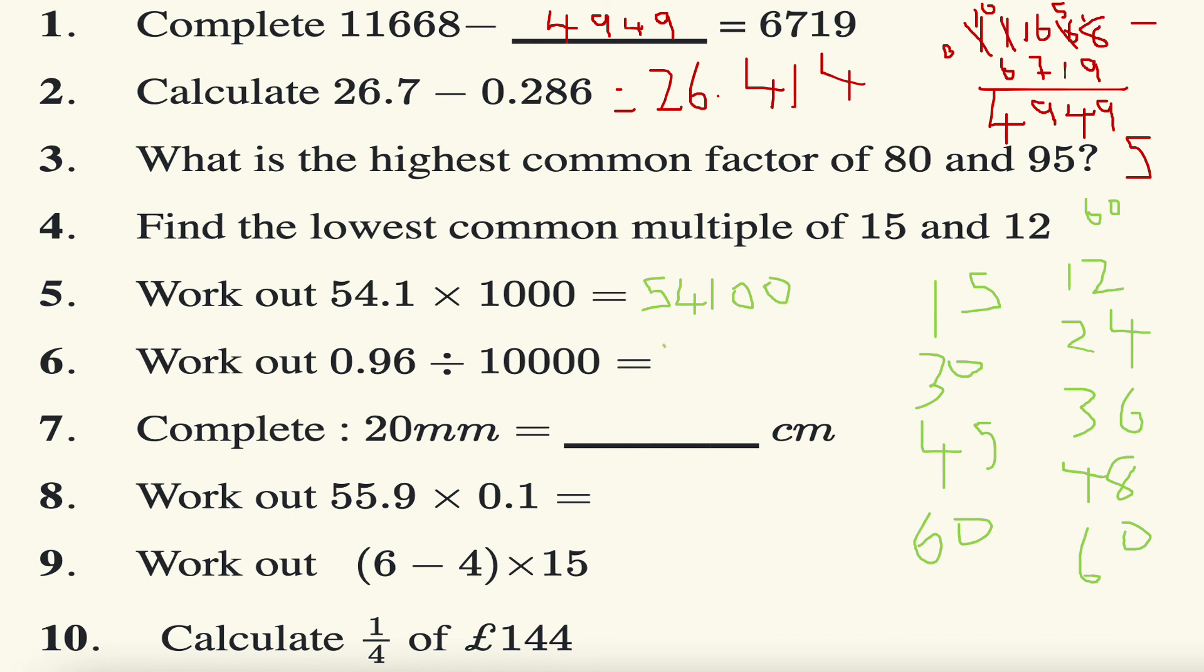This is question number six: work out 0.96 divided by 10000. So I move the decimal point four places to the left, so one, two, three, four. There's going to be 0.0, 0.00096, because if I move it four places I'm going to get one, two, three, four, which is 0.00096, which is what I want.